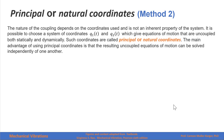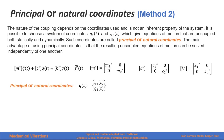Such coordinates are called principal or natural coordinates. The main advantage of using these principal coordinates is that the resulting uncoupled equations of motion can be solved independently of one another. Therefore, the matrix form of the system of equations will look like this, where we have the acceleration vector in terms of the principal coordinates, the velocity vector, and the displacement vector, and all matrices will be diagonal.